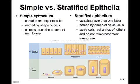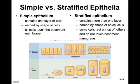Simple epithelium can be simple squamous with flat cells, simple cuboidal with cuboid cells, or simple columnar with more rectangular cells. Stratified epithelium is named by the shape of the apical cell. For example, even though the bottom cells are cuboidal, if the top surface cells are squamous-shaped, we call it stratified squamous epithelium. Some cells rest on top of others and don't touch the basement membrane.